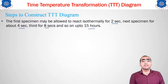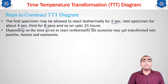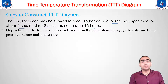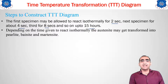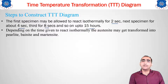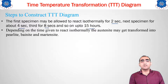As a result of varying the isothermal reaction time, the austenite will transform differently — into pearlite, bainite, or martensite. The time allowed for isothermal reaction in the second bath determines the final microstructure of the material. This is how the TTT diagram is constructed.